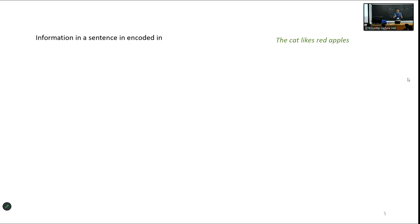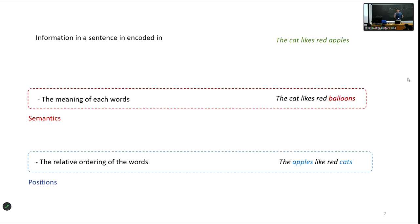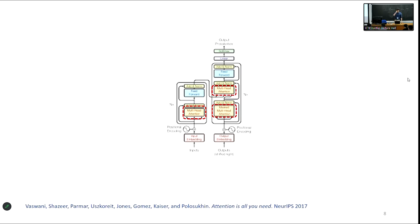This work was motivated by a simple observation: language as a data structure is very particular. Information in a sentence is encoded in two ways. First, in the meaning of each word — if I take the sentence 'the cat likes red apples' and replace one word, I'm altering the information. Second, information is encoded in the relative positions of words — if I permute the words, I'm also destroying information. So information in a sentence is encoded in both semantics and positions.